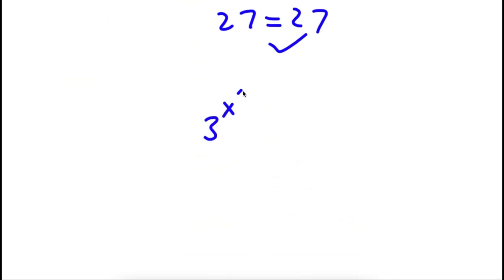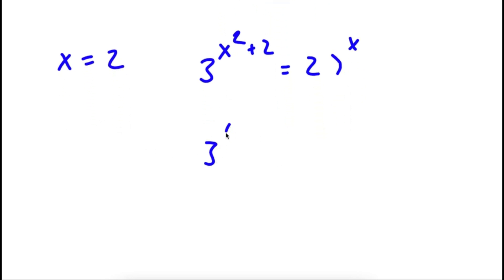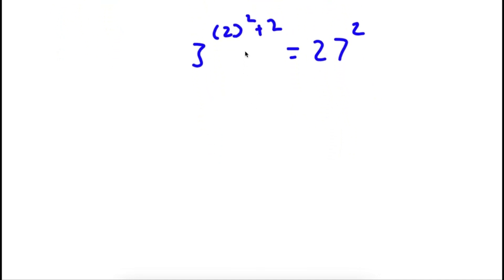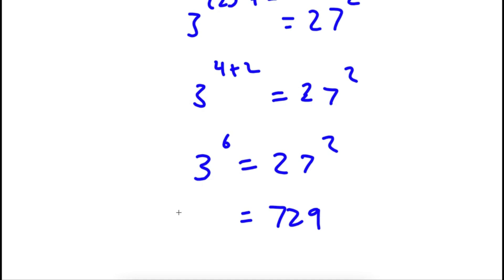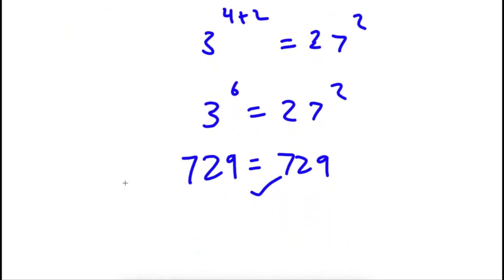Now let's try x is equal to 2. So I have 3 to the power of 2 squared plus 2 is equal to 27 to the power of 2. Now 2 squared is 4, so I have 3 to the power of 4 plus 2 is equal to 27 to the power of 2. 4 plus 2 is 6, so now I have 3 to the power of 6 is equal to 27 to the power of 2. Now 27 to the power of 2 is 729, and 3 to the power of 6 is also 729. So 729 equals 729, so x equals 2 is also a solution.